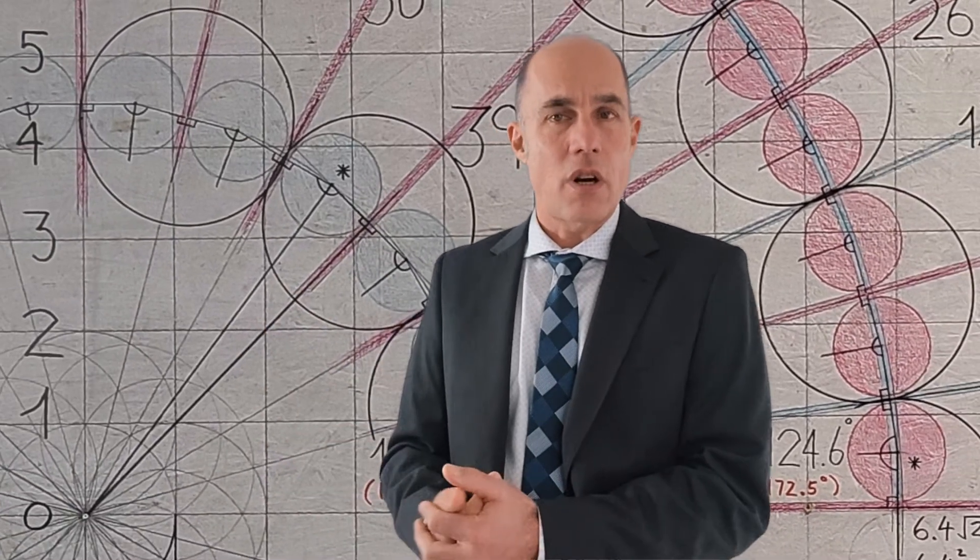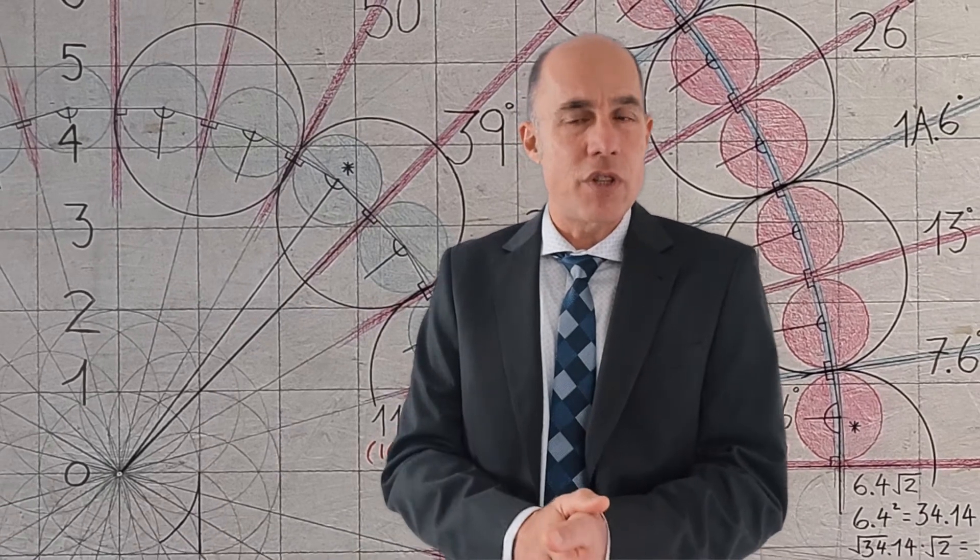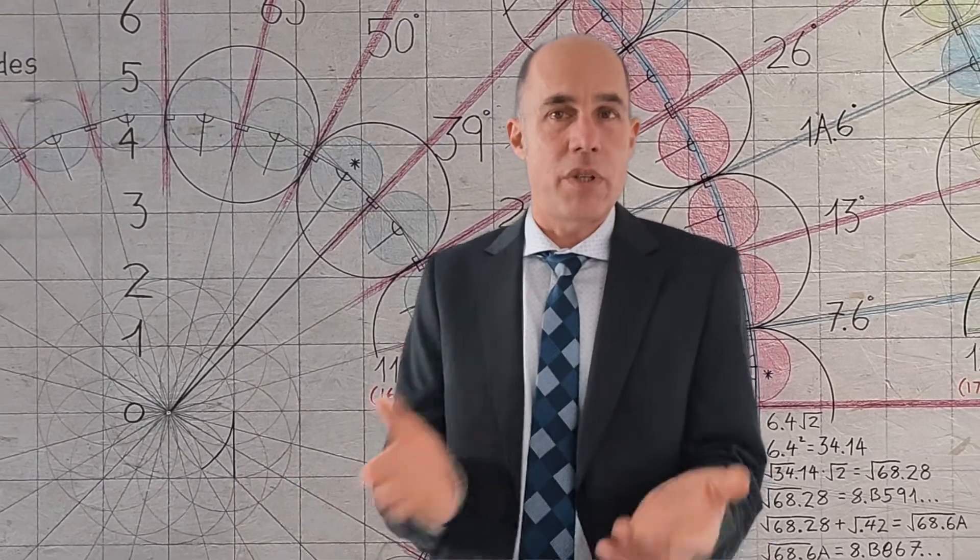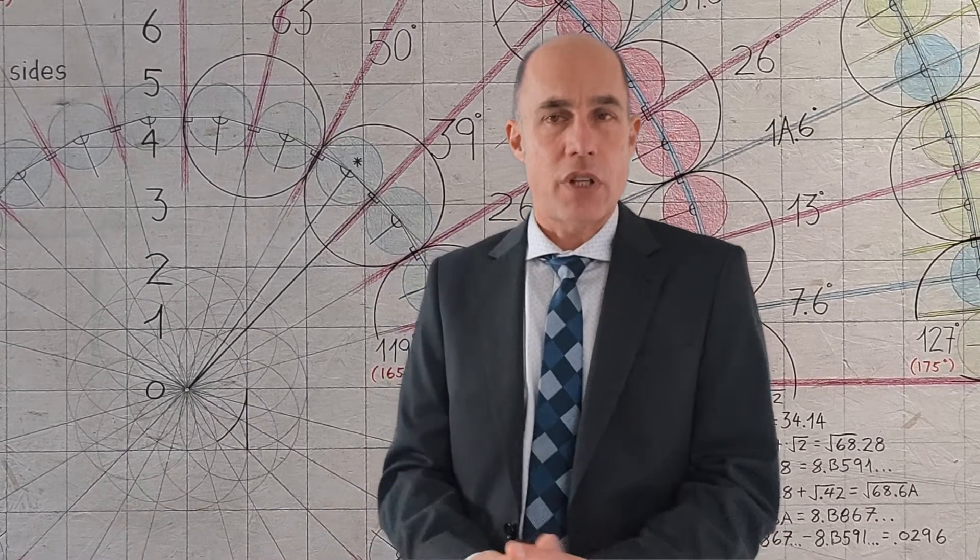And remember, those units are a combination of the diameter of the circle plus that little bit of extra empty space that's left over when we divide the diameter into the circumference.